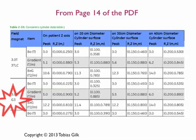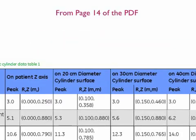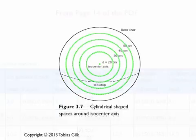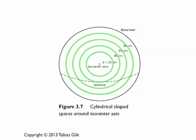The other critical thing to identify on this table is the top row: on patient Z axis, on 20-centimeter diameter cylinder surface, on a 30-centimeter diameter cylinder surface, on a 40-centimeter diameter cylinder surface. Where are all these cylinders? The cylinders are imaginary. Imagine yourself looking straight down the center of the bore, and we superimpose a bullseye of concentric rings. The Z axis is the dot in the center running down the length of the bore. As we move out at set distances — 20, 30, 40, 50 centimeters — we get these rings, which when extruded become cylinders.